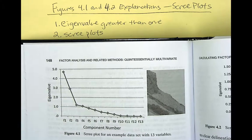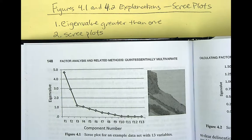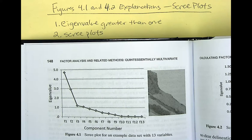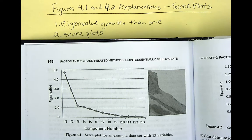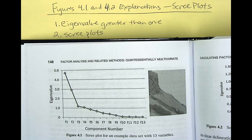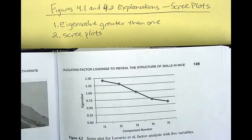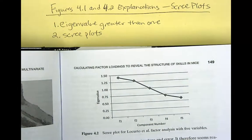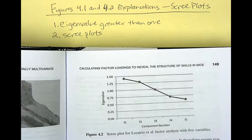Not all scree plots are so clearly delineated as this one for thirteen variables, as is discussed in your text. So we can look at the scree plot for the five variables in the study that's being conducted in your text about mice, and that's in figure 4.2.